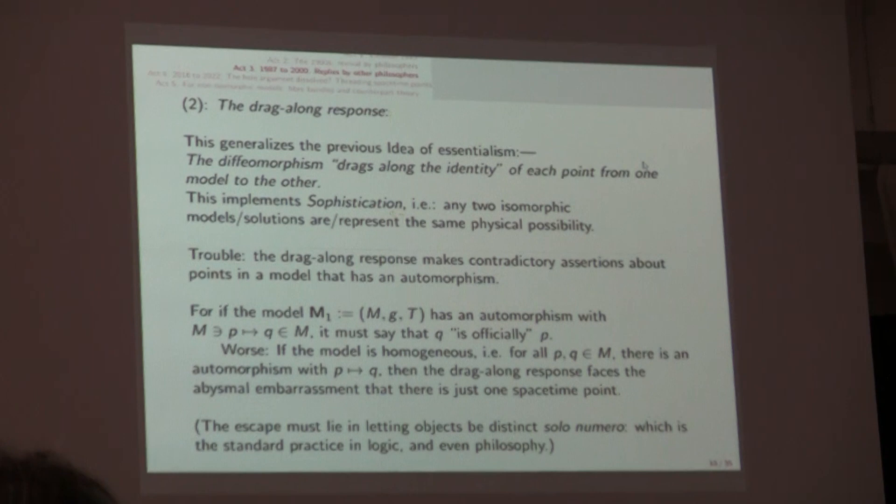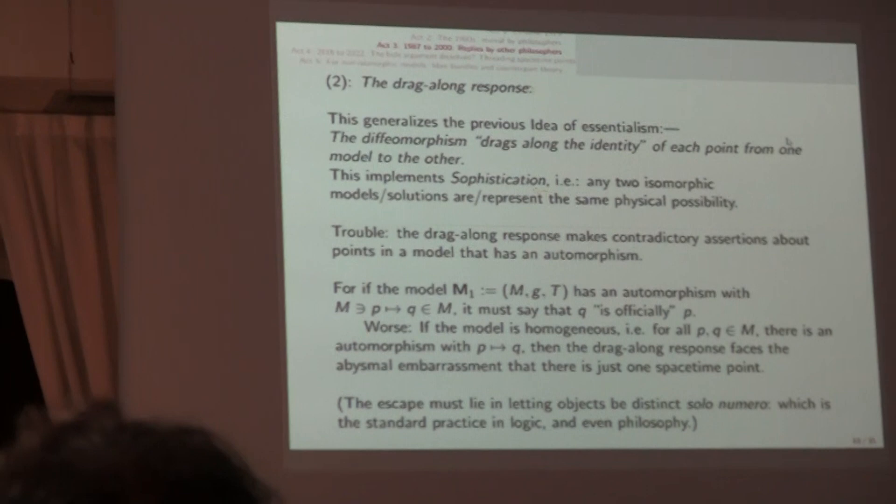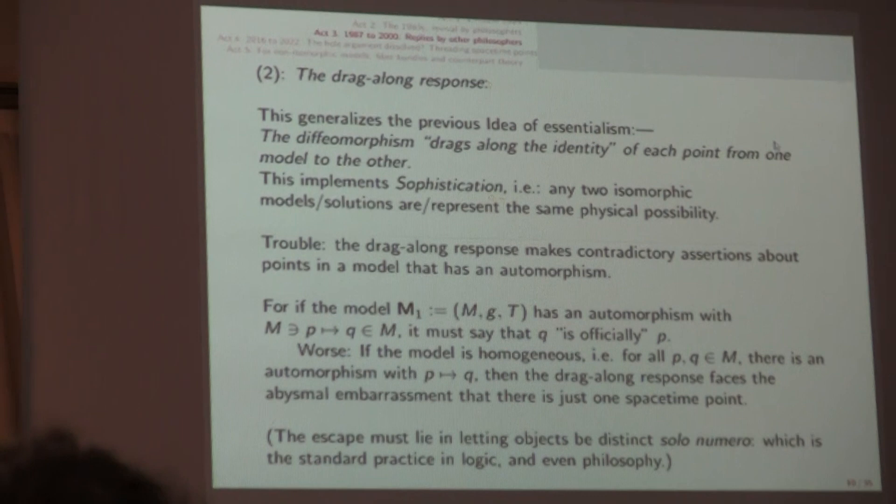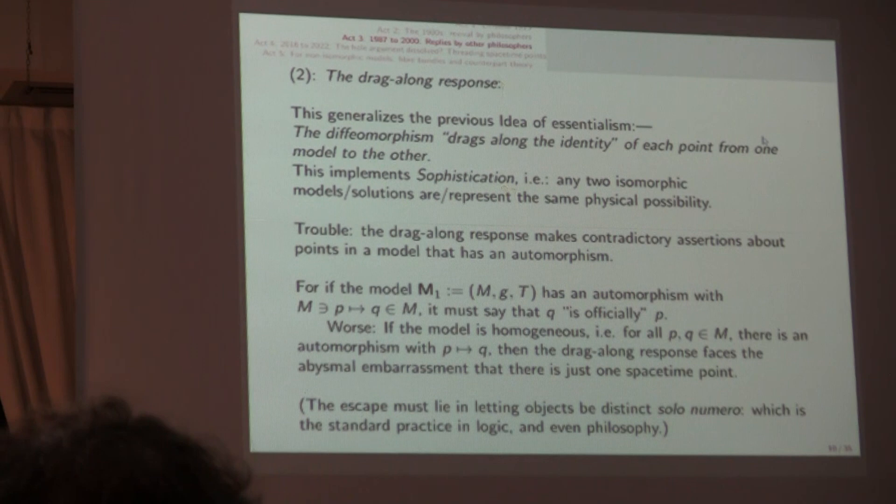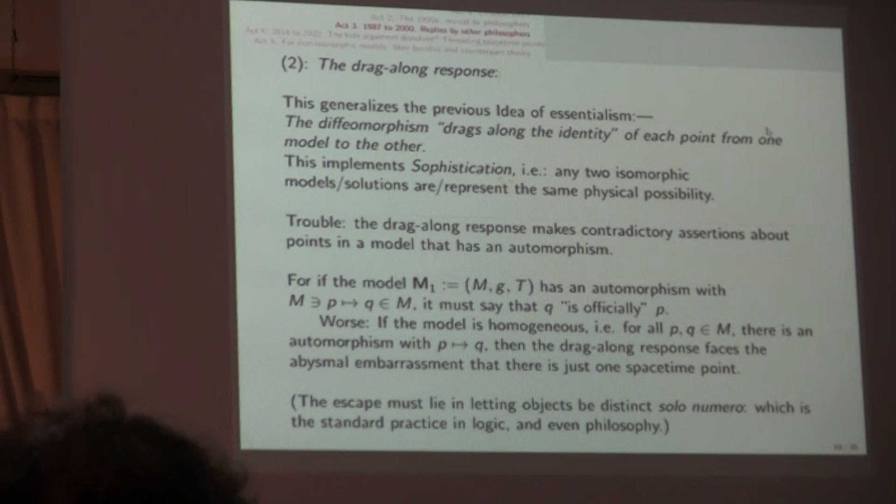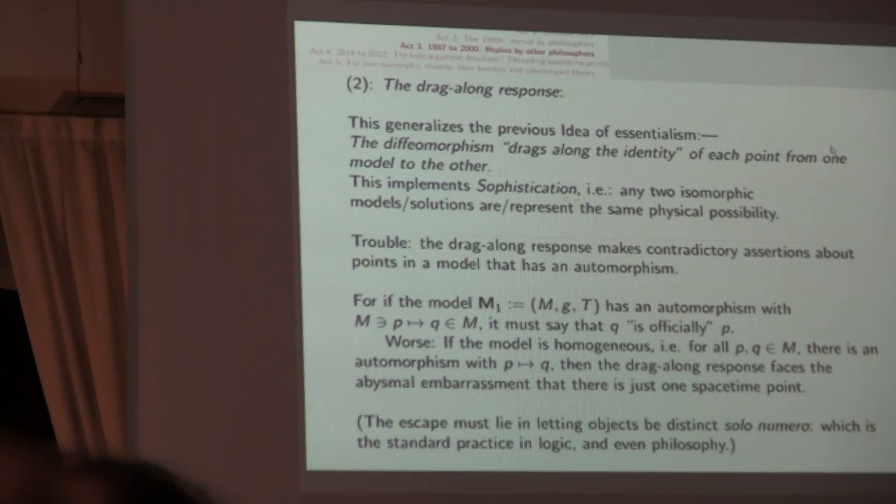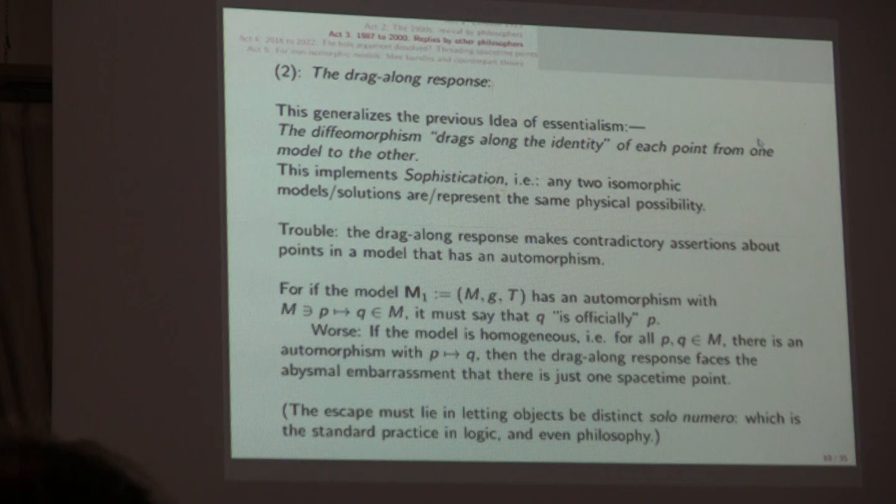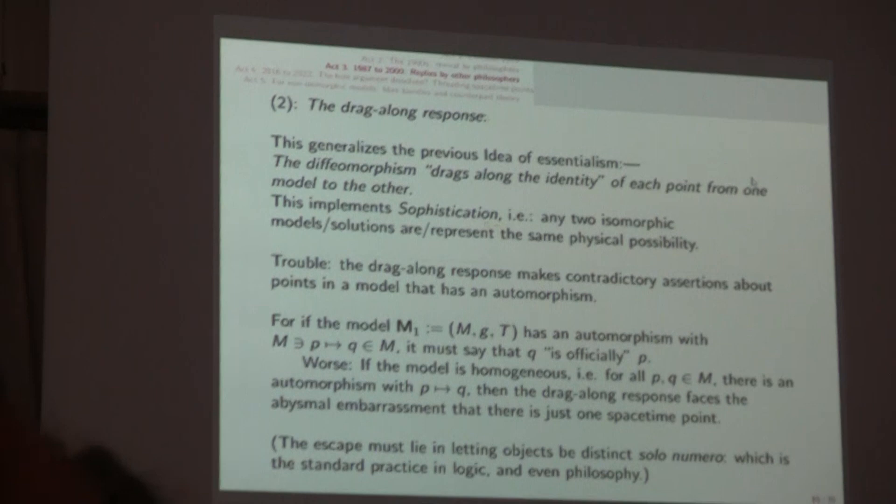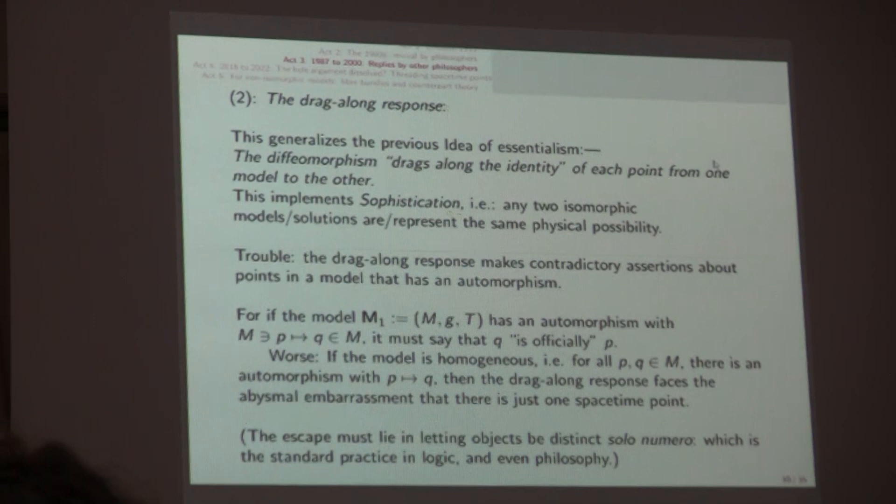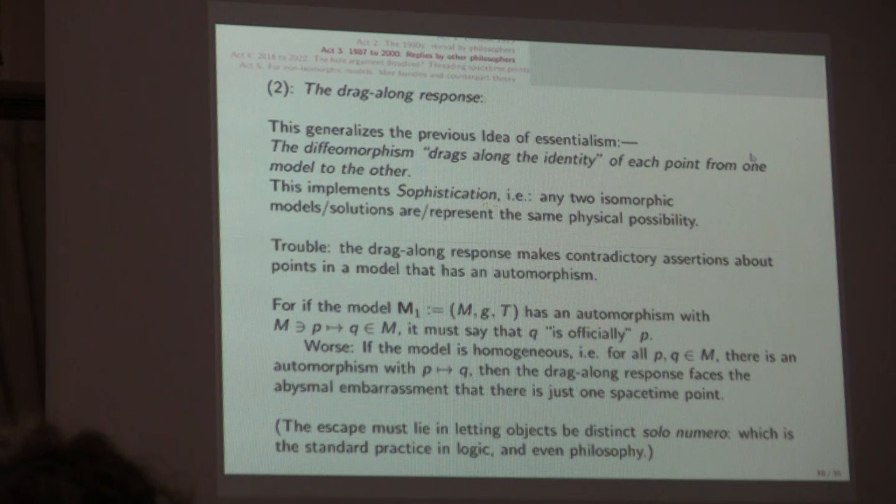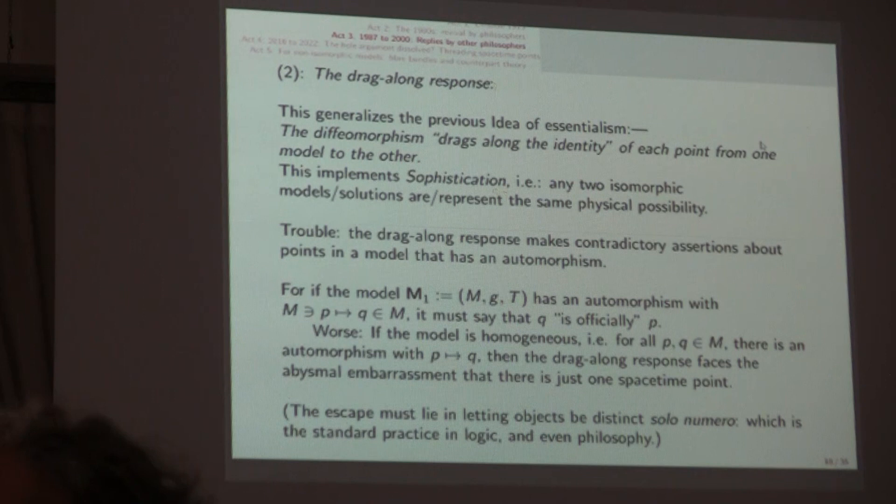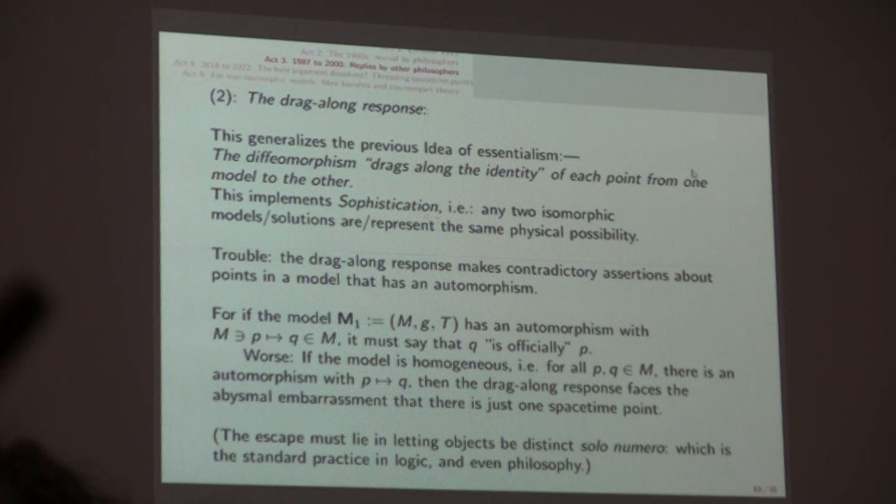Maudlin advocated this as come to be called metrical essentialism. The trouble is it's a severely limited doctrine. At least in Maudlin's view he only says it about the actual spacetime points. The result is that his reply to the hole argument says literally nothing about models that are not isometric with the actual cosmos assumed to be given by a solution of general relativity. There's a generalization of that metrical essentialism which will figure in upcoming slides. Gomes and I call it the drag-along response.